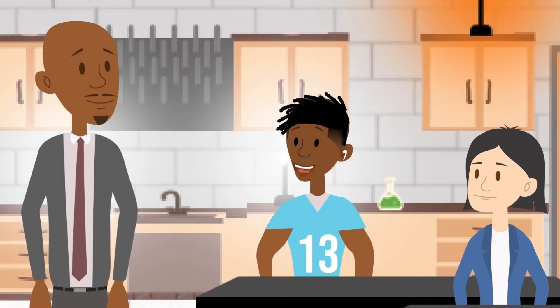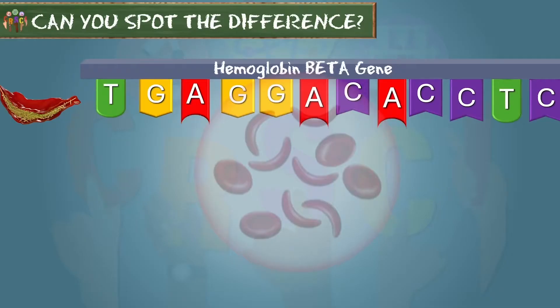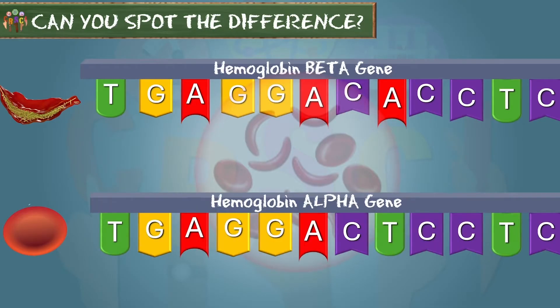I want to see the sequence for alpha hemoglobin. That's the normal shape one, right? Sure, here it is. I don't see a difference at all. Yeah, me neither.